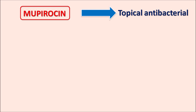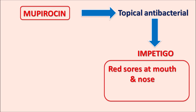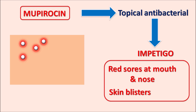This drug can be used to treat skin infections such as impetigo. In young children, impetigo produces red sores around the mouth as well as the nose. Skin blistering can be observed along with itching, and in some cases red areas appear on the skin.